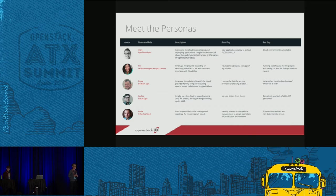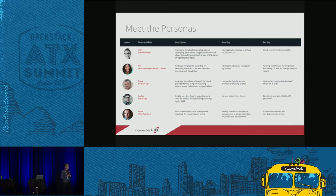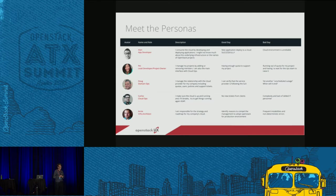The easiest way to imagine Doug is to think of a hosted relationship: somebody's providing the infrastructure, and Doug works for the customer, making sure the customer gets what they expect from the infrastructure provider. In a large enterprise it would likely be a more informal role, but in a service provider type of environment Doug will definitely be there — someone has to make sure the provider is delivering.